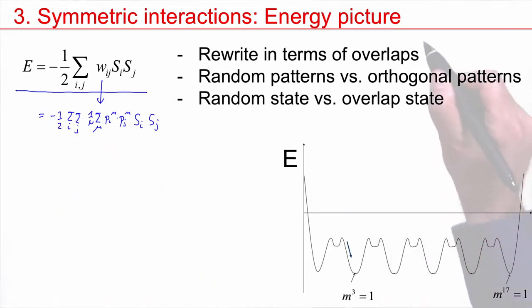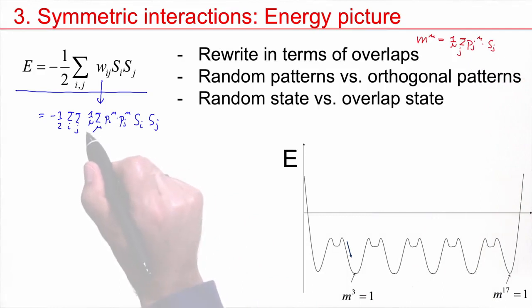Now remember the definition of the overlap. Overlap with pattern mu is 1 over N, sum over J, P_J^mu S_J. Look what we have here. I have a 1 over N, P_J^mu S_J sum over J. So this gives the overlap M^mu, which means overlap with the pattern number mu.